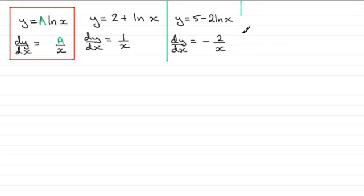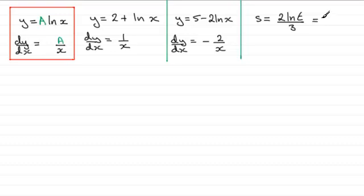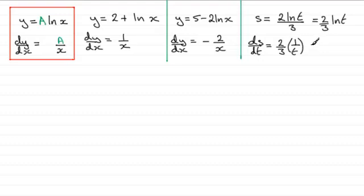It doesn't have to be y equals a function of x — it can be any other function. For example, S equals 2 times the natural log of t, all divided by 3. I see this as 2 thirds multiplied by the natural log of t. So ds/dt is going to be 2 thirds multiplied by the differential of natural log of t, which is 2 thirds times 1 over t, giving us 2 over 3t.